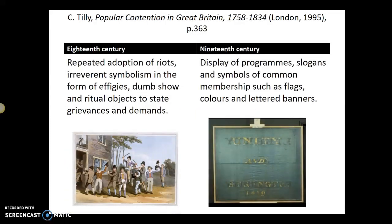In the 18th century, there's a lot of riot, and those riots include charivari, symbols such as effigies, rough music, ritual objects, as a way of community justice. Whereas in the 19th century, that sense of local identity and customary belief is neutralised or shaped differently through other types of symbols, such as flags, banners, colours, and particular slogans.